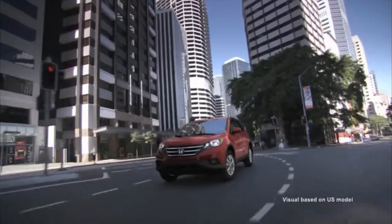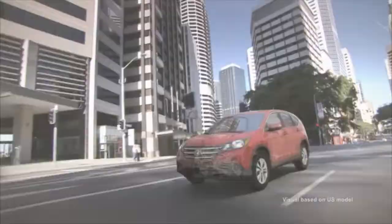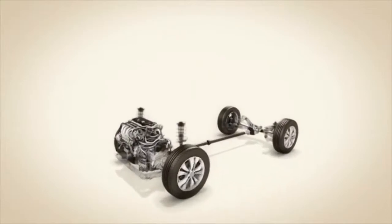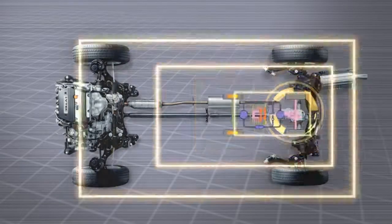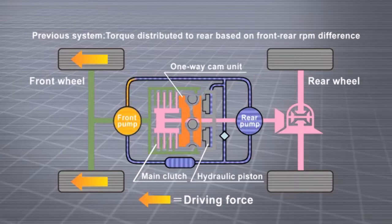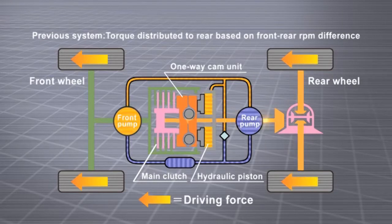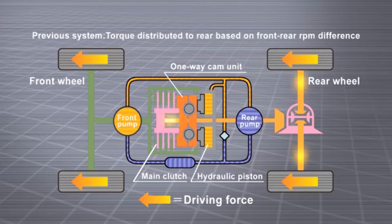Introducing real-time AWD with intelligent control. In the previous system, two pumps detected front-rear RPM differences with torque distributed to the rear wheels accordingly. In the new real-time AWD, the ECU controls a motor and a hydraulic control valve.